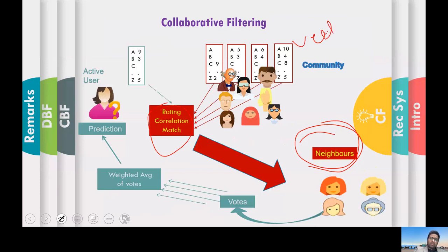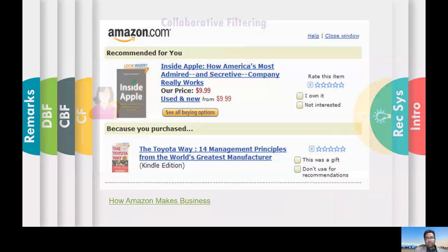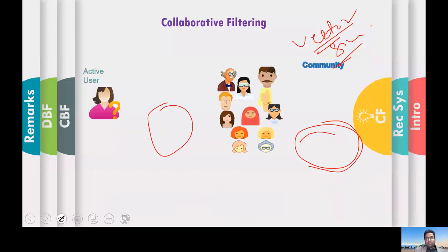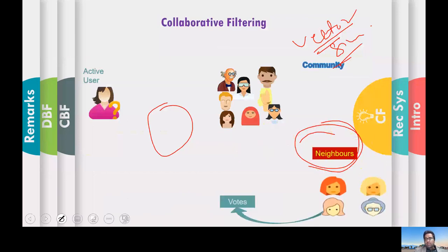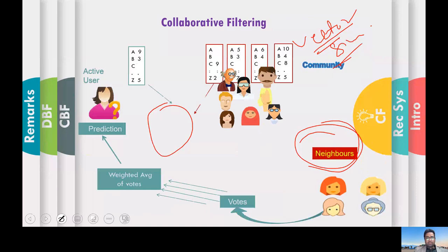We can use vector similarity and find the similar users. You have an active user, and from the group of users you find similar users called neighbors. From these neighbors you take their voting into account and make some prediction based on aggregate or majority opinion.